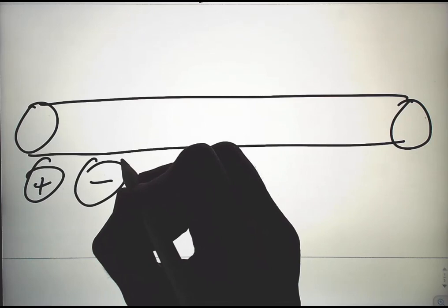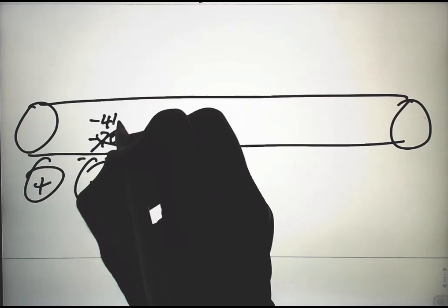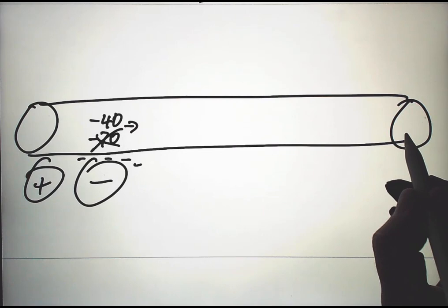If we stimulate here, we make the outside more negative. We change the minus 70 to, say, minus 40. That starts an action potential.